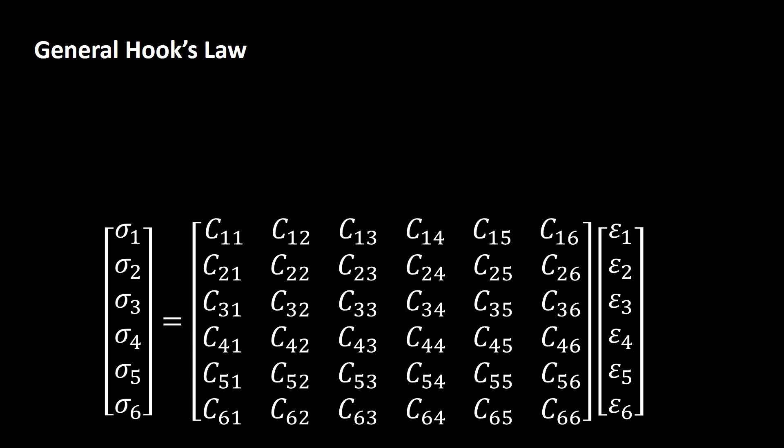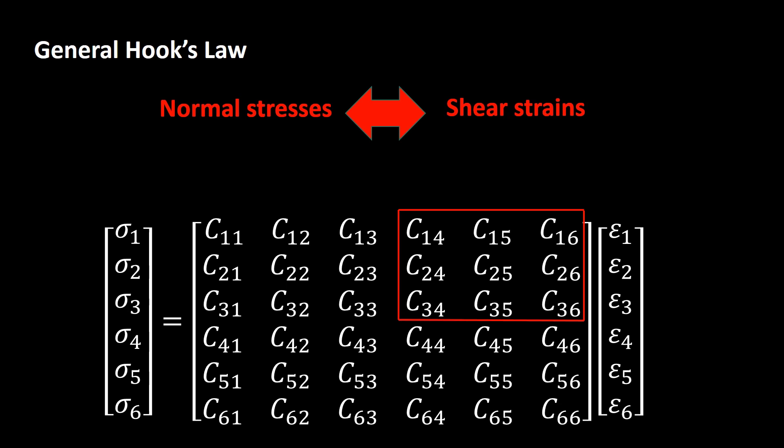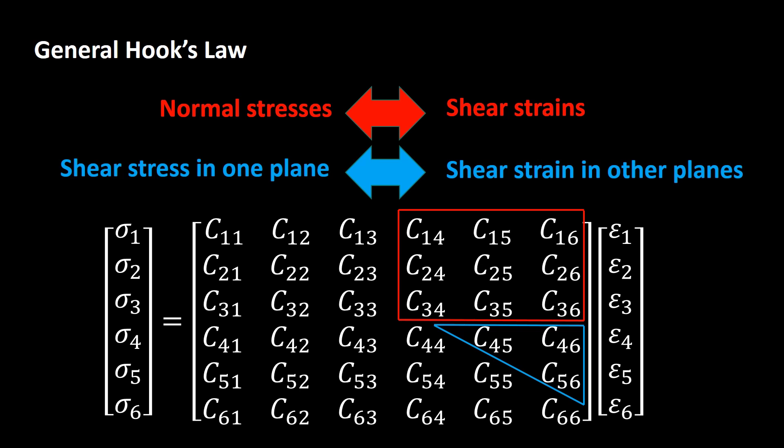It is interesting to understand the meaning of some parts of the stiffness matrix. Nine components relate normal stresses to shear strains — connections you cannot observe in isotropic materials. This means that by applying a normal stress, the response contains shear strains rather than normal strains, and vice versa. Three other components relate shear stresses in one plane to shear strains in other planes; unlike isotropic materials, shear stresses and strains of different planes are connected.